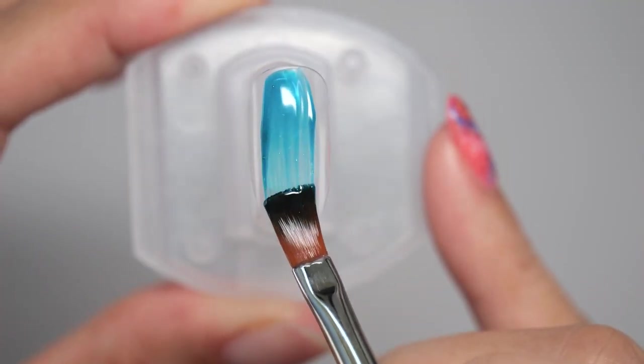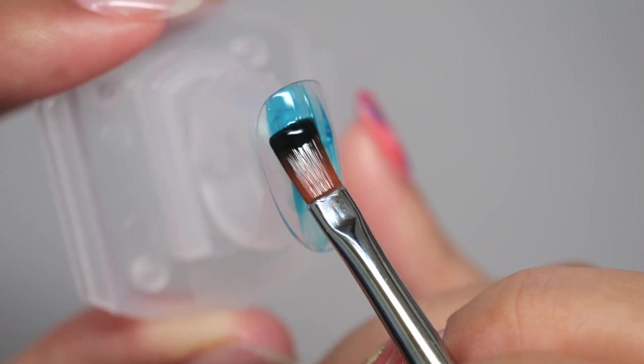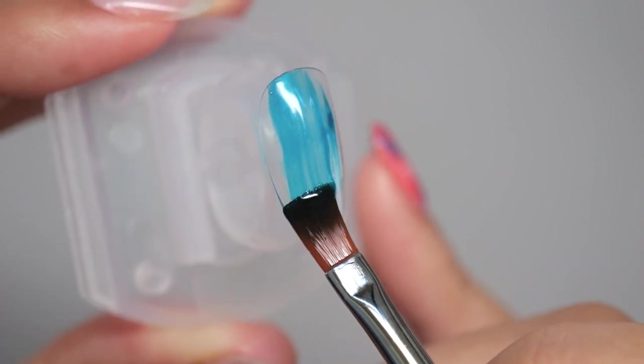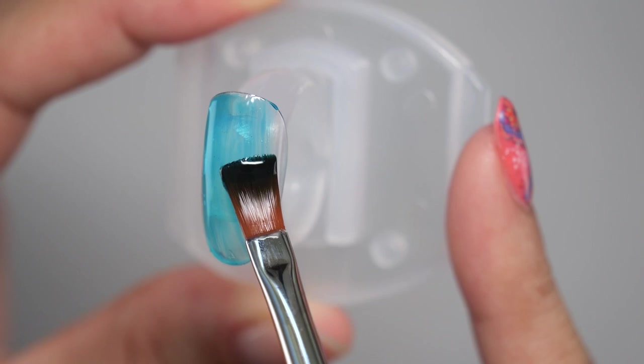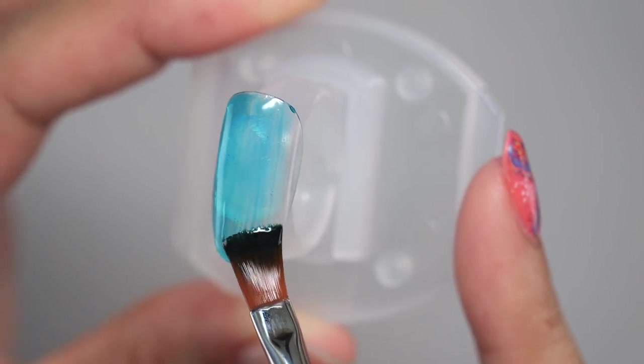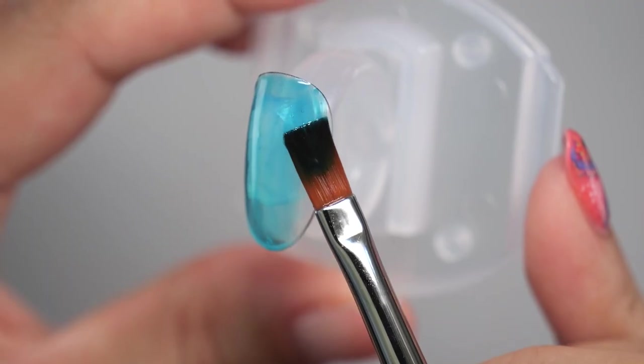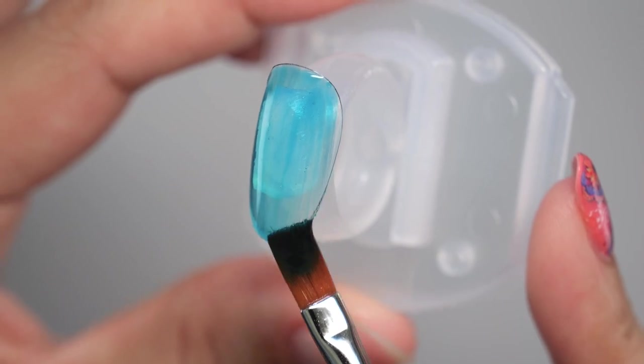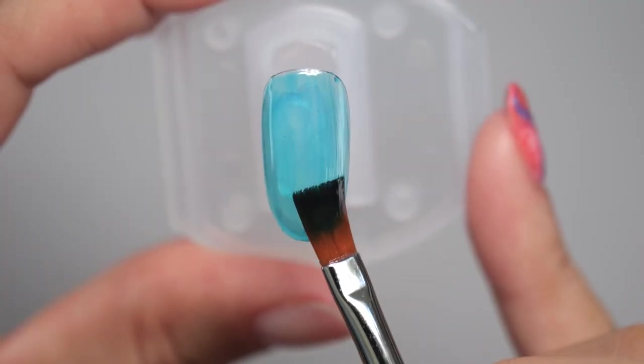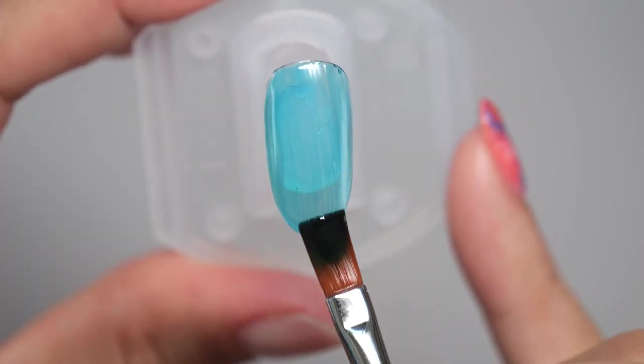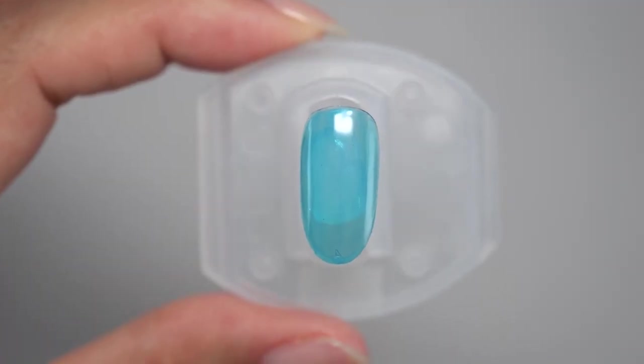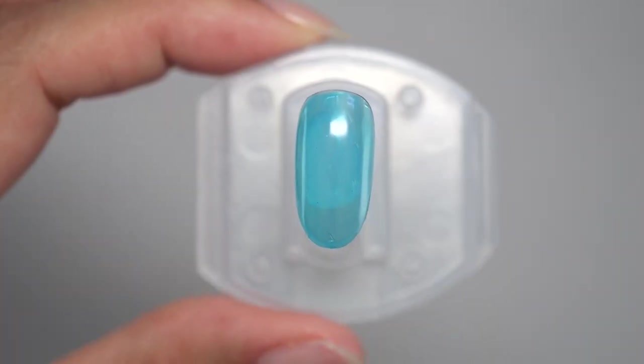When creating this bubble nail design, choosing a base color that is translucent and sheer, called a sheer base color, is recommended to create a cool summery design. After applying all over, cure.